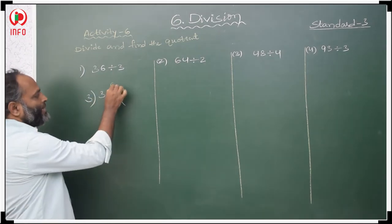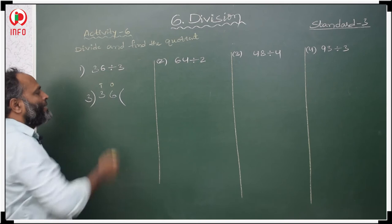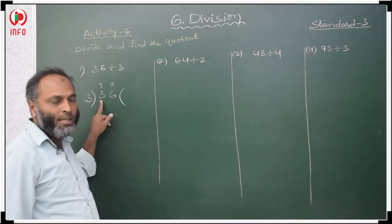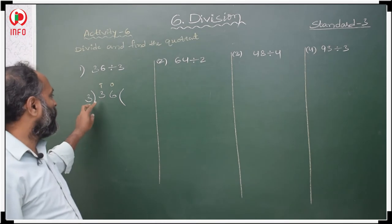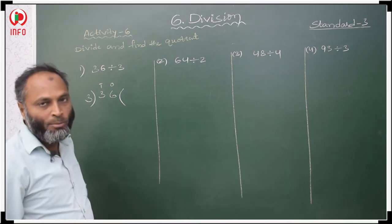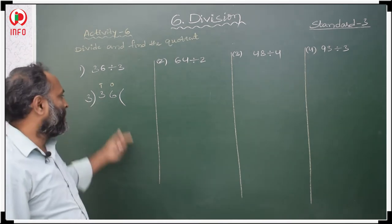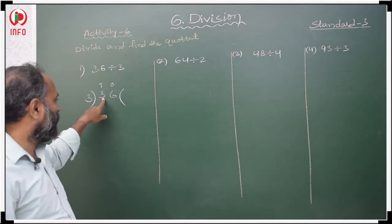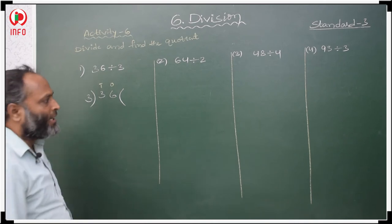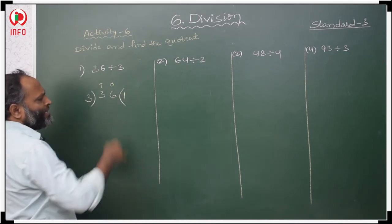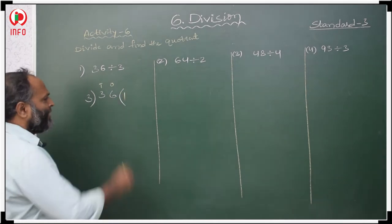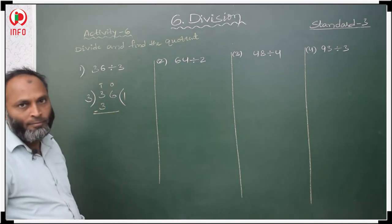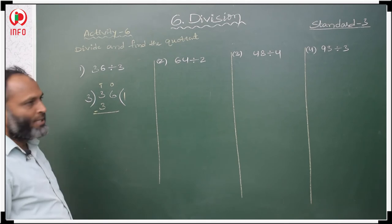This is in 1's place and this is in 10's place. First, take the extreme left digit — that is 3. Compare 3 with the divisor 3. Both are equal, so no need to take 36 at a time. When will you get 3 in the 3 table? 3 ones are 3, so we write 1 in the 10's place.